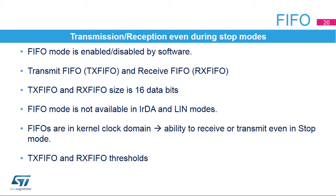The USART can operate in FIFO mode, which is enabled or disabled by software. It is disabled by default. The USART comes with a transmit FIFO (TX FIFO) and a receive FIFO (RX FIFO), each being 16 words deep. When the IRDA and LIN modes are used, the FIFO mode is not supported. Provided that the TX FIFO and RX FIFO are clocked by the kernel clock, it is possible to transmit and receive data even in stop mode. It is possible to configure TX FIFO and RX FIFO thresholds, mainly to avoid underrun/overrun issues while waking up from stop mode.